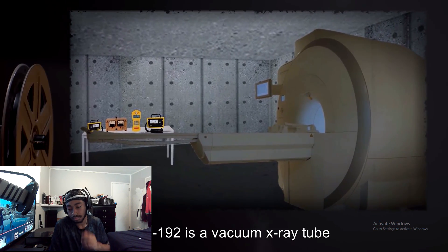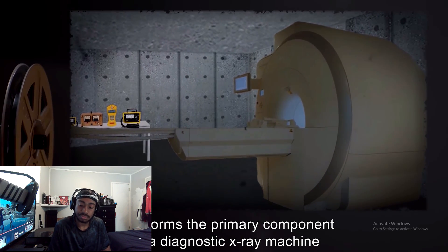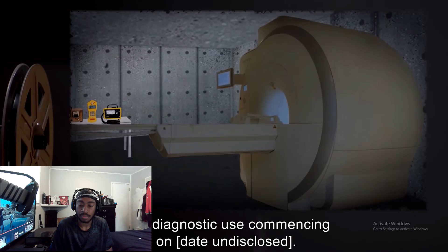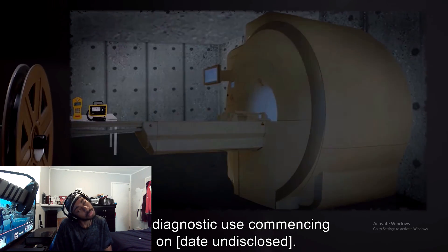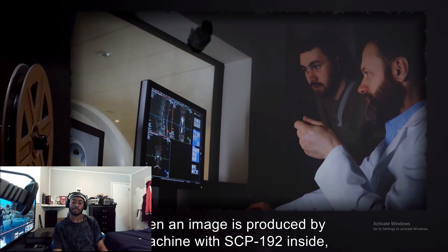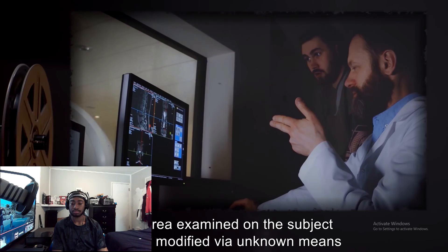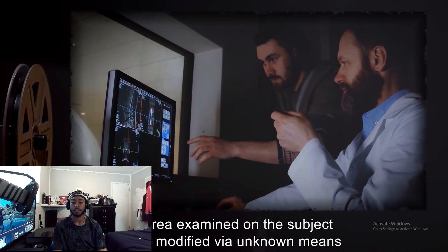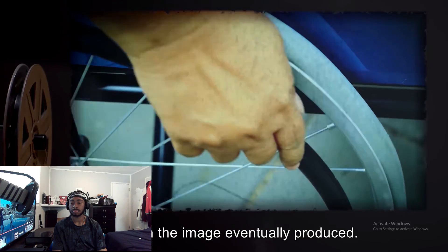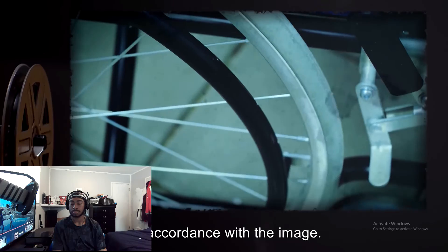Description. SCP-192 is a vacuum x-ray tube that forms the primary component of a diagnostic x-ray machine, manufactured by, with diagnostic use commencing on date undisclosed. This machine was designated SCP-192-1. When an image is produced by a machine with SCP-192 inside, the area examined on the subject will be modified via unknown means to match the image eventually produced. This has the effect of introducing or removing injuries or disease from the subject in accordance with the image.